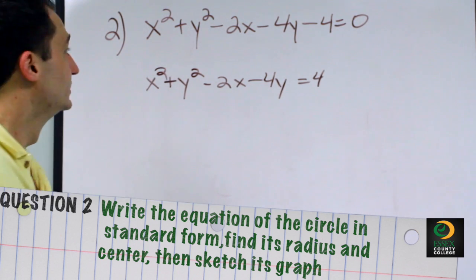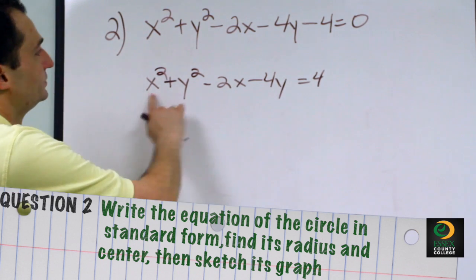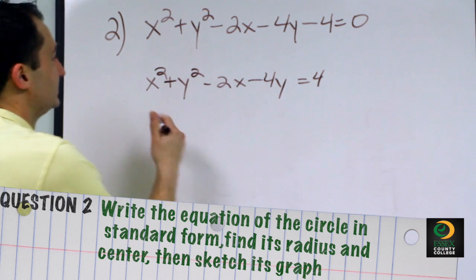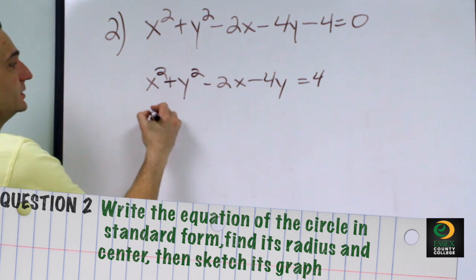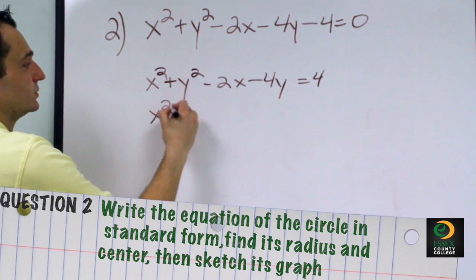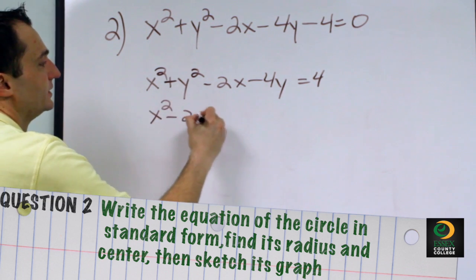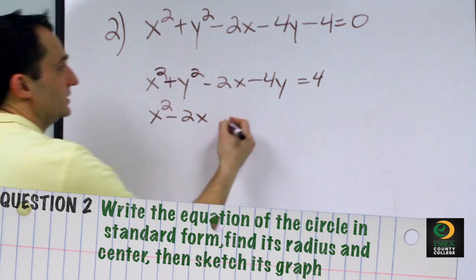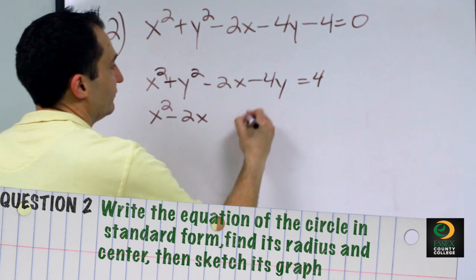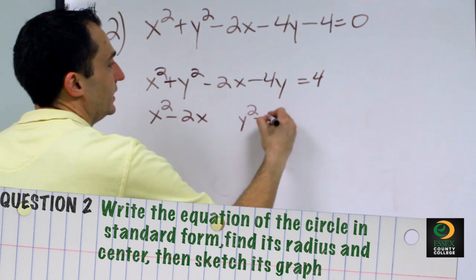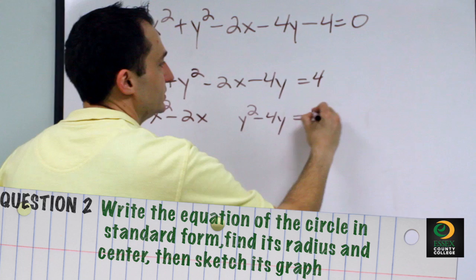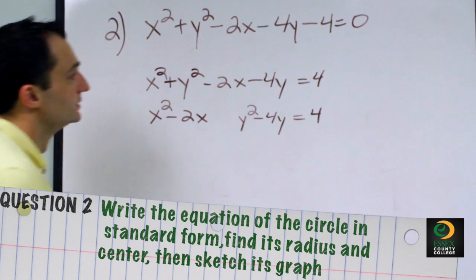Our next step would be to group the x's together and then the y's together. So we have x squared minus 2x, leave a space, and we have y squared minus 4y equals 4.